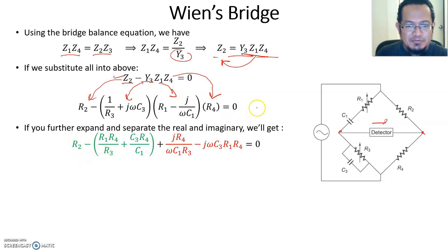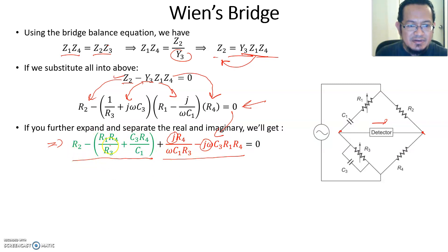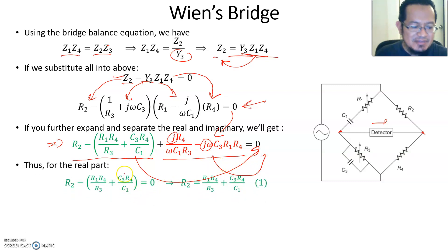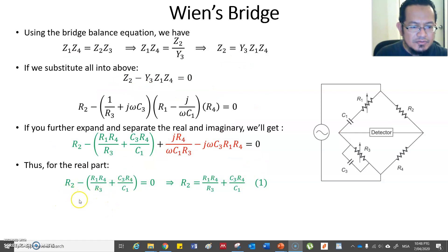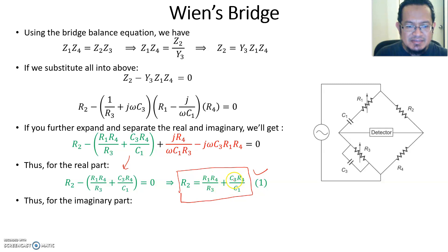I suggest you try to expand this and derive the final equations as an exercise. The green font represents all real values and the red font represents all imaginary values — you can tell the difference by the letter j. For the real part, R2 minus the terms in parentheses must equal zero. Simplifying gives the first formula: R2 = (R1·R4)/R3 + (C3·R4)/C1.